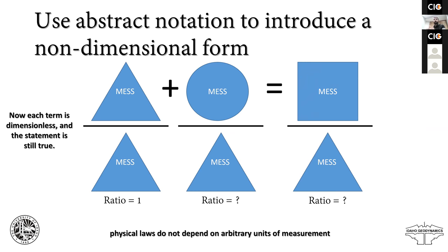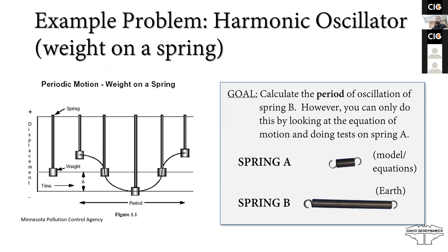After introducing this abstract way of writing the equation, I like to point out that if we non-dimensionalize our equation, there are often terms that show up which are ratios of constants — non-dimensional numbers. And we are going to use a simple problem to get at non-dimensional numbers and prove that they have power to describe the physics of a problem.